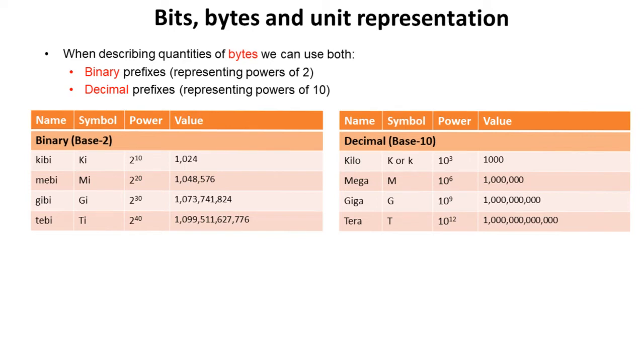Of course, in computing, we obviously use binary, which is base 2. You can see how the numbers are comparable but slightly different. So when we multiply up in powers of 2, we end up with 1,024 and that's a kibi. 1,024 of those is a mebi, 1,024 of those is a gibi, and 1,024 of those is a tebi.